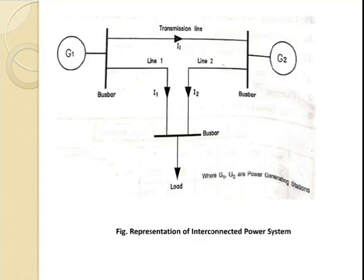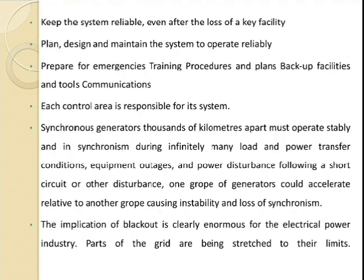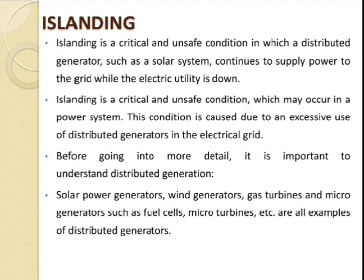We can start with the theory of islanding condition. So the first question is: what do you mean by islanding? Whenever we go through islanding, there are different kinds of distributed generators connected with the grid. The grid is a number of interconnected systems having a generation system, transmission line, and distribution line connected, with the main aim of transferring power from the generating station to the consumer side.